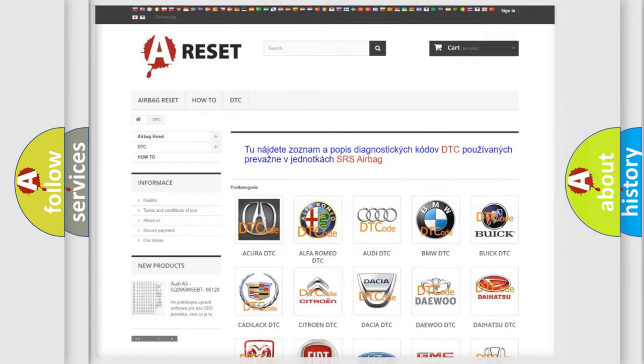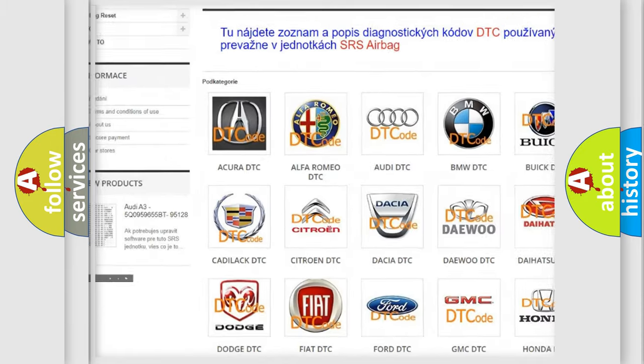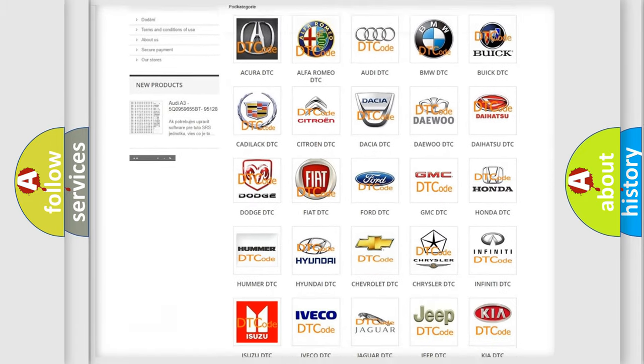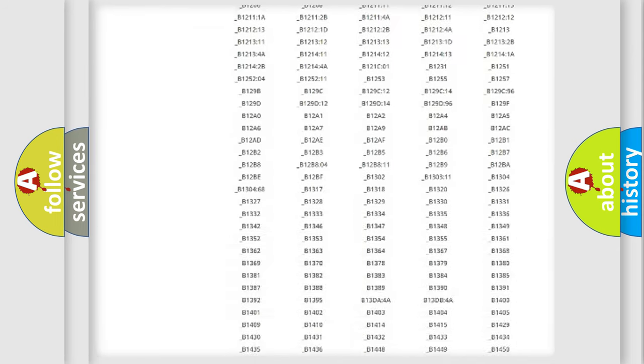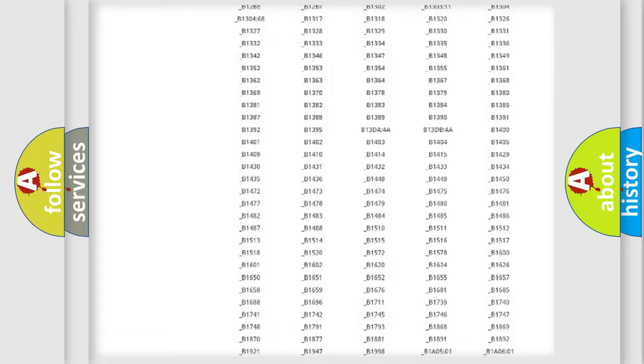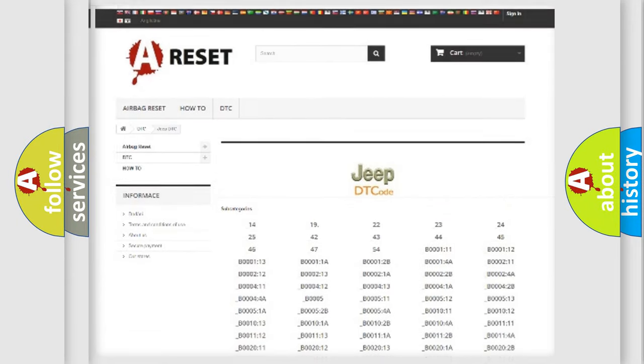Our website airbagreset.sk produces useful videos for you. You do not have to go through the OBD2 protocol anymore to know how to troubleshoot any car breakdown. You will find all the diagnostic codes that can be diagnosed in Jeep vehicles, and also many other useful things.